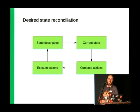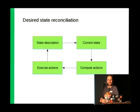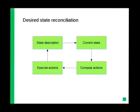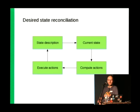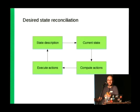All orchestration engines have the concept of reconciliation. You start by describing how things should look — like: I want five instances of this web application container running at the same time. Then you just forget about it as a user. Behind the scenes, the orchestration engine looks at the current state, computes the actions required to reach the desired state, and executes them. This is a constant loop, so if one container dies, the current state differs from the desired state and the engine just fixes itself.